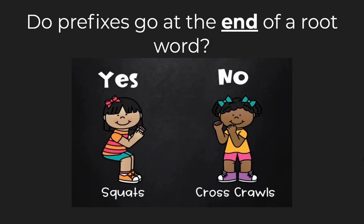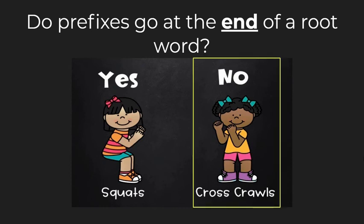Do prefixes go at the end of a root word? Think about where prefixes go — is it the beginning or the end? The answer is no, prefixes do not go at the end of a root word; that would be a suffix. Remember, prefixes go at the beginning. A way to remember that is the prefix pre in the word prefixes itself means before — so before the word.